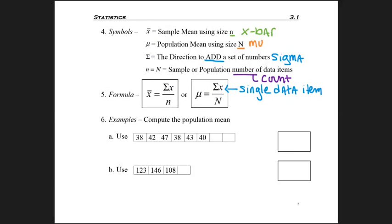X is a single data item. So we're going to add every single data item that's in our list, and then we're going to be dividing by n, which was the count. So we already did that process on the other page. But let's go ahead and look at problem 6a.